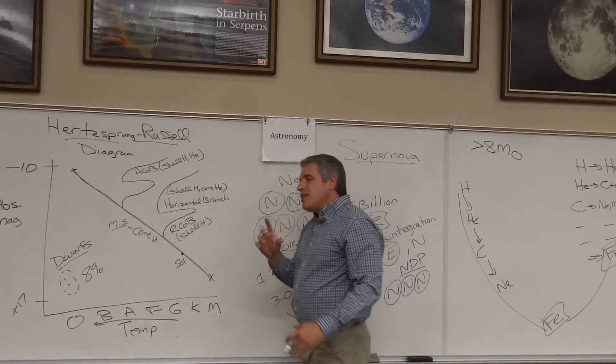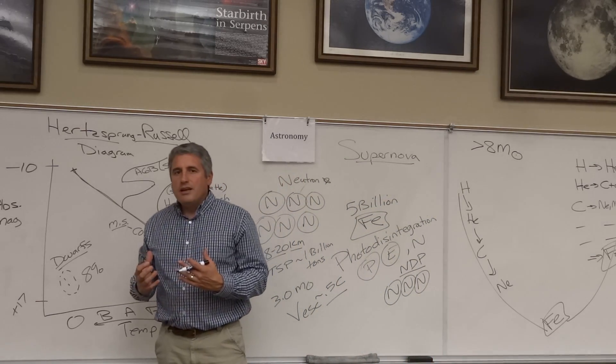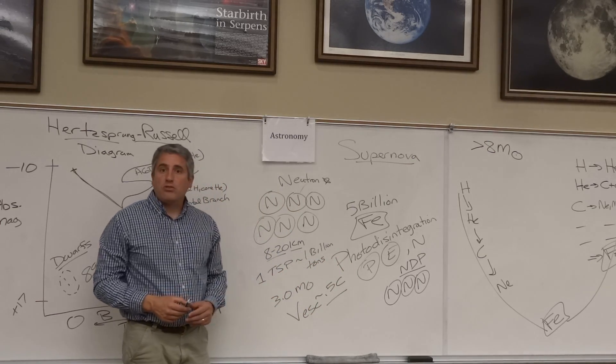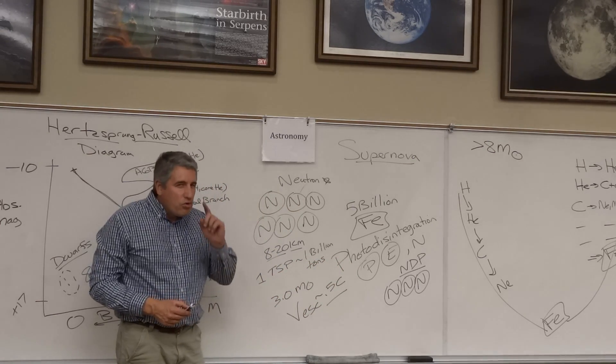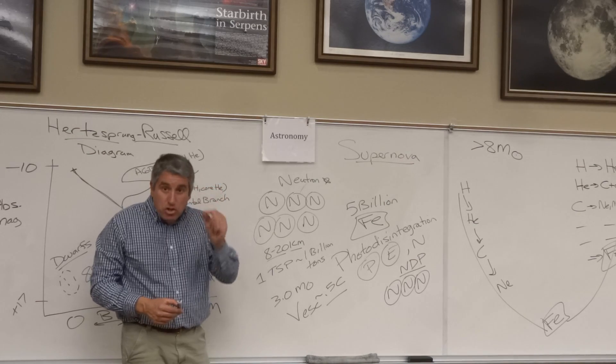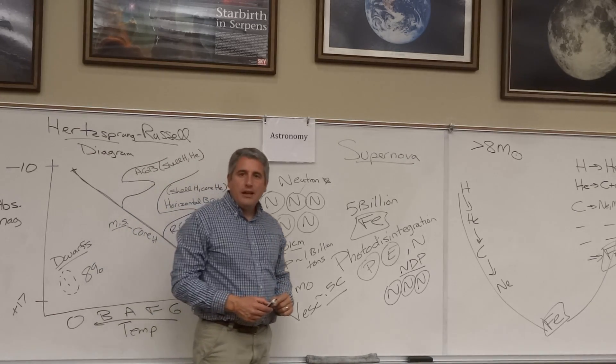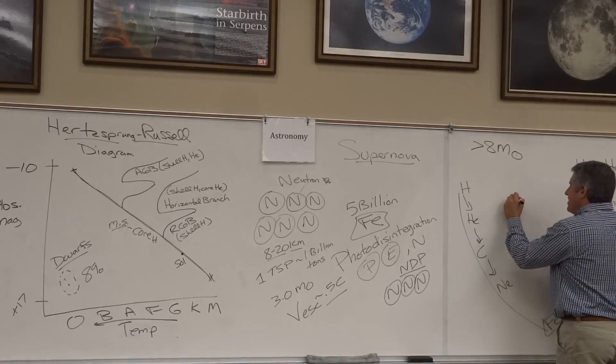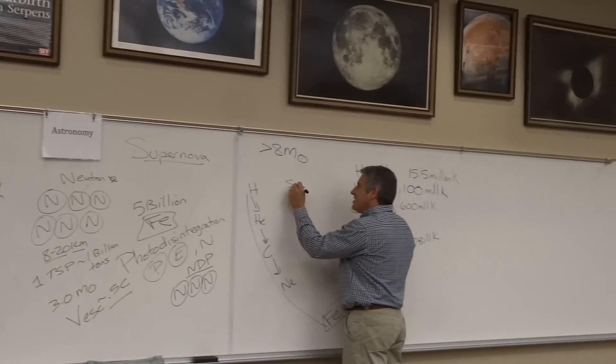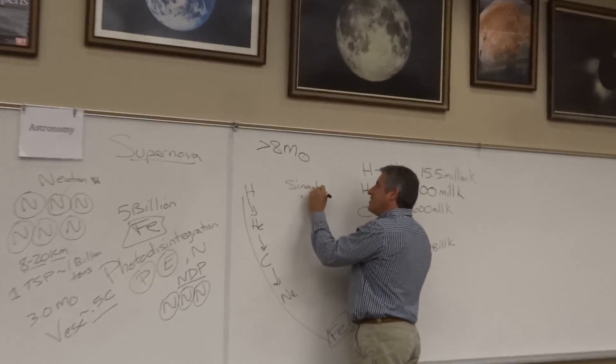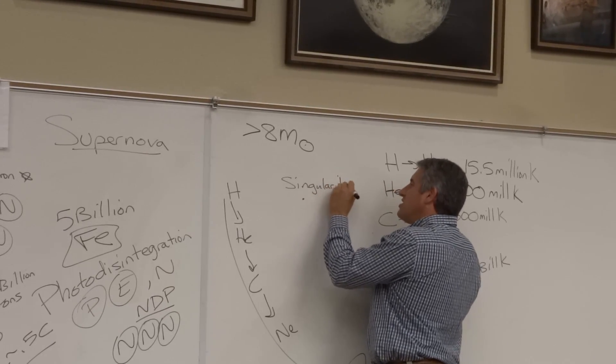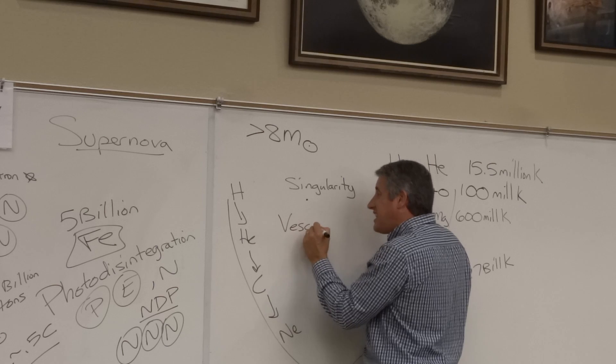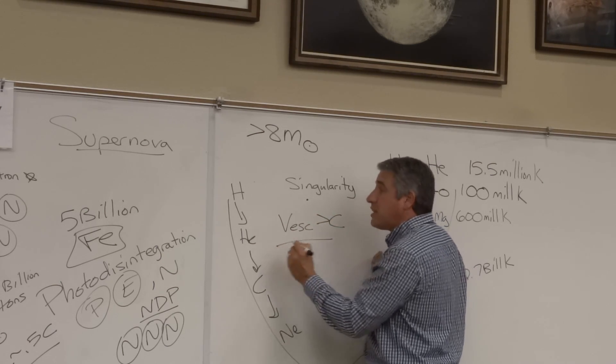Because stars that are really big give rise to things that are more than three solar masses. And those things do overcome neutron degeneracy pressure. They collapse further into something known as a singularity. A singular point.